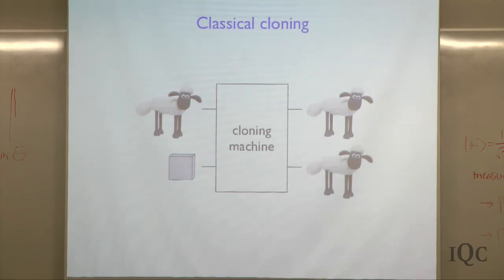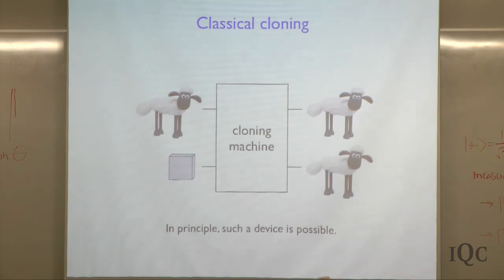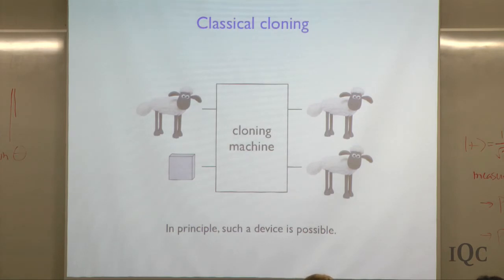From the point of view of classical physics, there's nothing wrong with the possibility of having such a device. In principle such a device is possible. One way you could build it is to make something which would go in and very accurately measure the dimensions of this thing — it would scan it, figure out exactly how it looks, and then just build another one. There's no classical physical principle that rules out the possibility of doing that, because in classical physics you can completely determine the state of the system. So you just completely determine the state of the sheep and then you make another sheep.